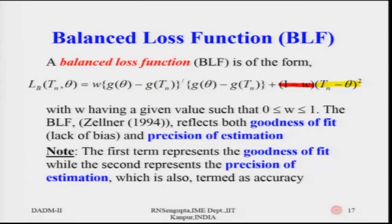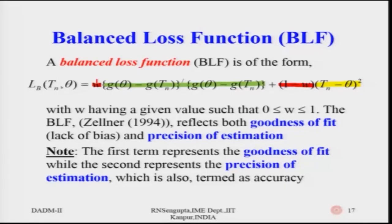The balanced loss function proposed by Zellner in 1994 reflects both goodness of fit and precision of estimation. The first term represents goodness of fit while the second represents accuracy of the initial estimation. The two weights sum to 1, combining the estimation and forecasting objectives into a single balanced criterion.